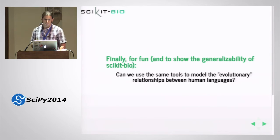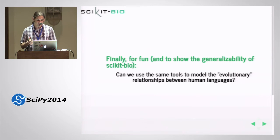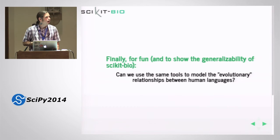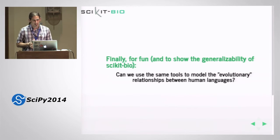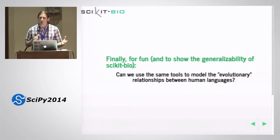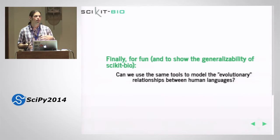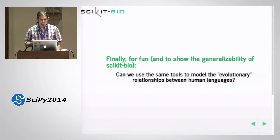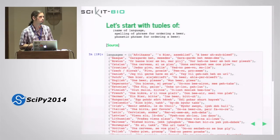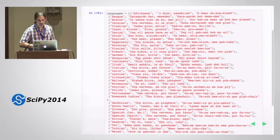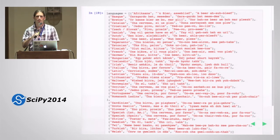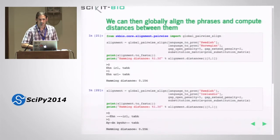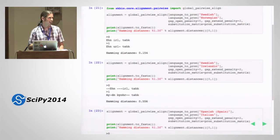I want to show one more example. I think it's fun and does a good job of showing the generalizability of scikit-bio. I picked it because I travel a lot and I like beer. The question I was interested in is whether we could use these same tools — the same tools we use for studying relationships between organisms — to study the evolutionary relationship between human language. I went out on the web and compiled a list of how to order a beer in about 40 different languages, including the spelling of the phrase and a phonetic representation.